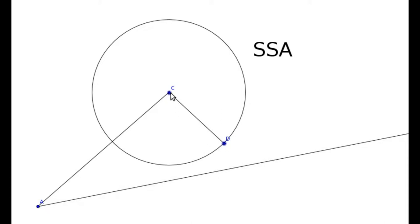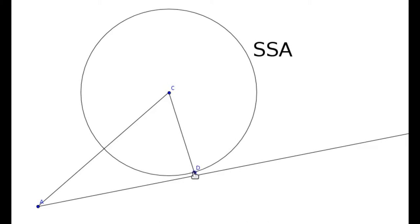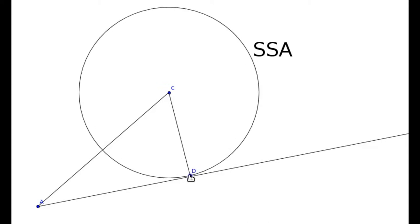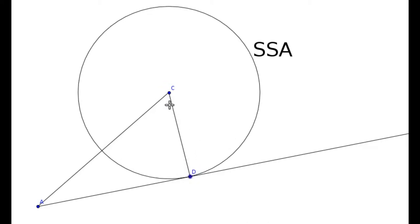On the other hand, if the length of this diameter is exactly the perpendicular length from C to this side over here—let me pull that down to represent that, more or less like that—okay, so if CD was exactly the perpendicular length from C to this line, then side-side-angle would have exactly one solution.